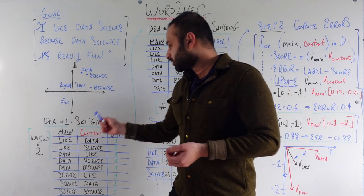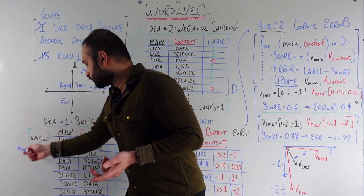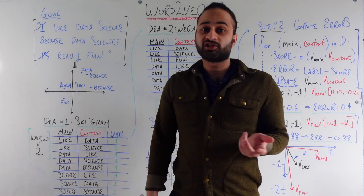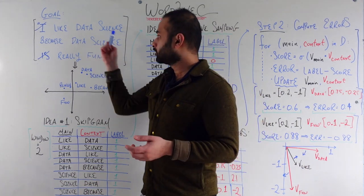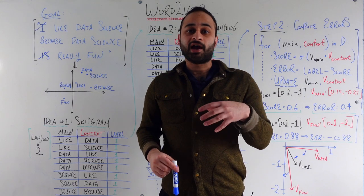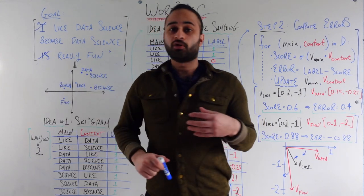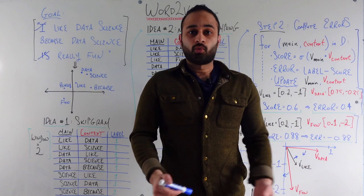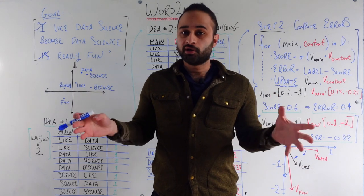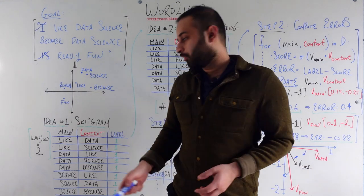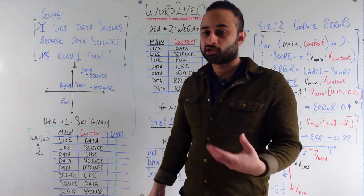Then big idea number one is called skipgram. This is pretty simple. We first pick a window size — for example, let's pick window size 2 — and then we visit each and every word in the sentence and ask: who are the two words to your left and who are the two words to your right? We're going to call that your context or your neighborhood and record all of that into this table. That idea is called skipgram.